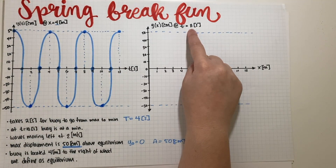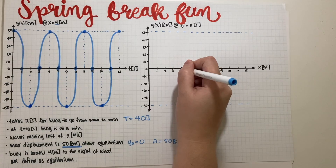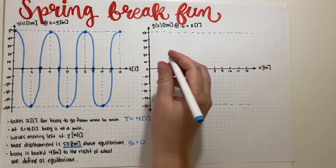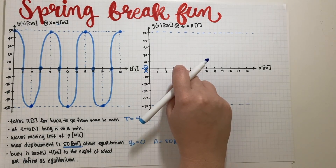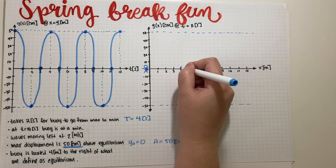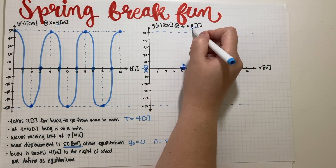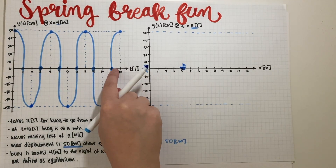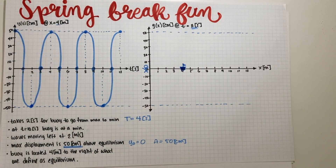At t = 11 seconds the buoy is at y = 0. So on the position graph, at x = 4 the displacement is zero. You, the observer, are at x = 0, and the buoy is at x = 4, four meters away. At t = 11 seconds the buoy is at zero displacement, so that point on the spatial graph is at zero.